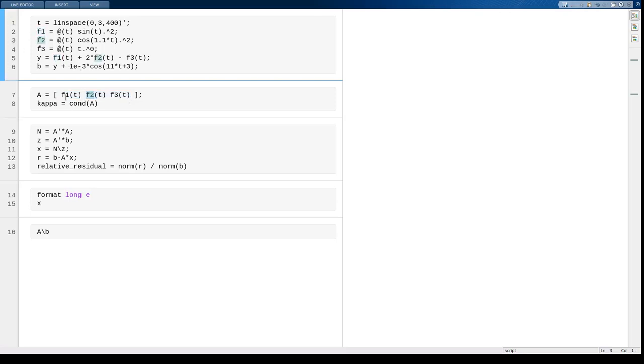And since I'm using these same three functions that I used up here, the true solution should be pretty close to the 1, 2, minus 1 that I used in the first place, with a small perturbation because the data was changed a little bit.